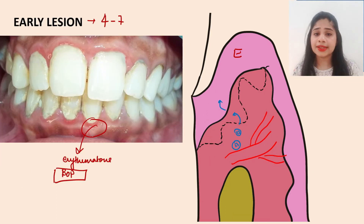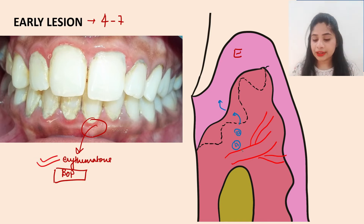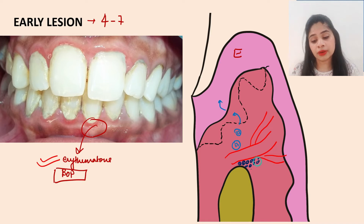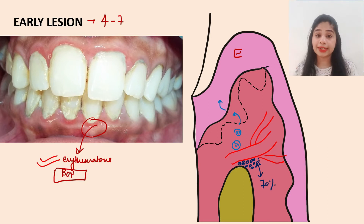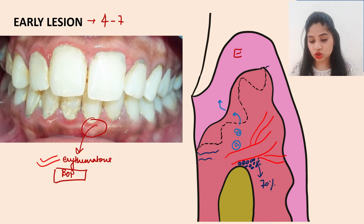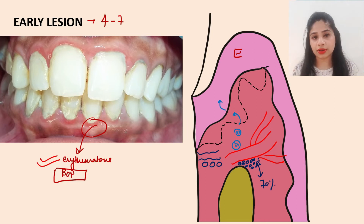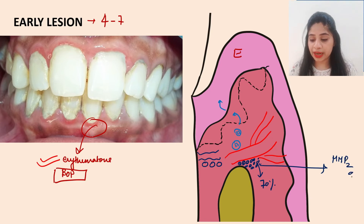There is increased proliferation of blood vessels in Stage 2, which is the major cause of the erythematous change — giving the gingiva its reddish hue. In the perivascular area, destruction increases, and almost 70% of the collagen present there is destroyed. The gingival fibers — including the dento-gingival group and sulcular group — are also destroyed, with significant release of MMP-2 and MMP-9 mediating this collagen destruction.